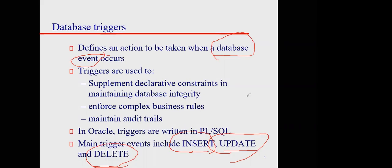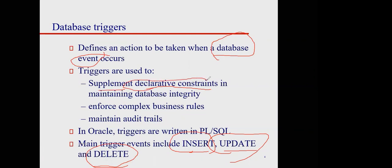Triggers can be used for supplementary action for declarative constraints. Declarative constraints — which we covered last lecture — include foreign key, primary key, unique, not null, and check. Triggers help supplement these declarative constraints in maintaining database integrity. We have two kinds of integrity: entity integrity, relevant to the primary key, and referential integrity, relevant to the foreign key.